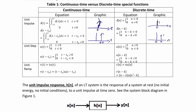The unit step u of t equals 1 for t greater than 0, and 0 for t less than 0. The shifted unit step u of t minus t-naught equals 1 where t minus t-naught is greater than or equal to 0, and 0 otherwise. In discrete time, u of n equals 1 for n greater than or equal to 0, and 0 otherwise. The shifted version u of n minus k equals 1 for n minus k greater than or equal to 0, and 0 for n minus k less than 0. Here's the unit step in continuous time turning on at time 0 with a value of 1, and the shifted unit step turning on at time t-naught with an amplitude of 1.